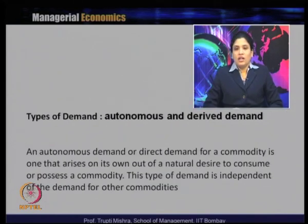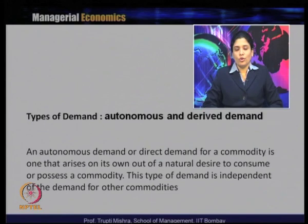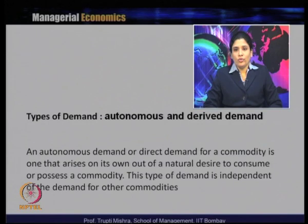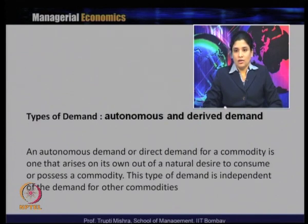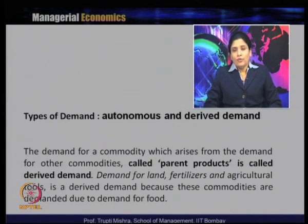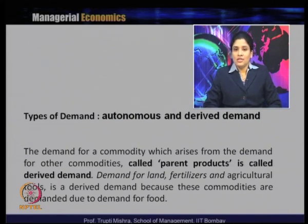The third type of demand is autonomous demand or derived demand. Autonomous demand — also called direct demand — is demand that comes on its own out of a natural desire to consume or possess a commodity. This type of demand is independent of the demand of other commodities. Autonomous demand generally comes from the natural desire to consume or own a product, with no external force guiding it.